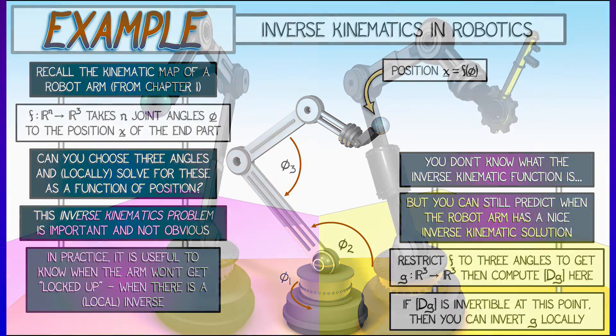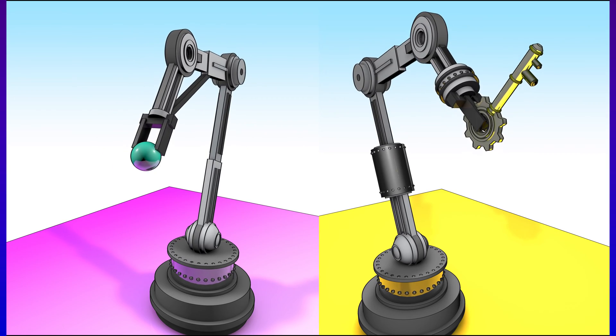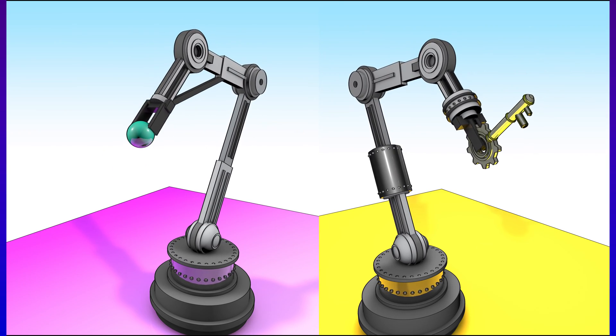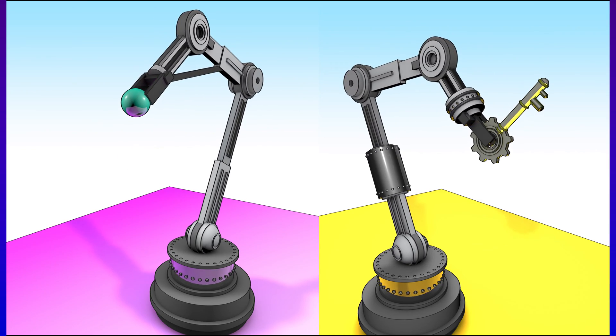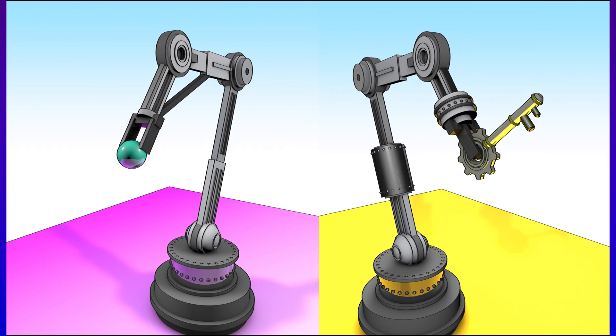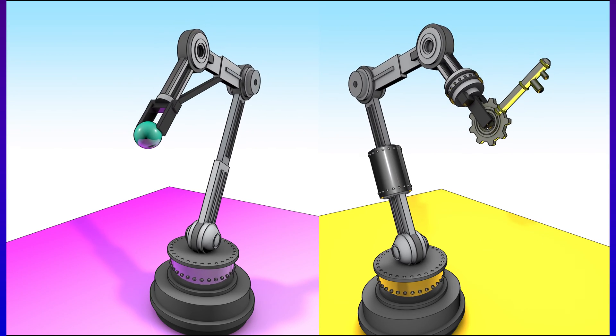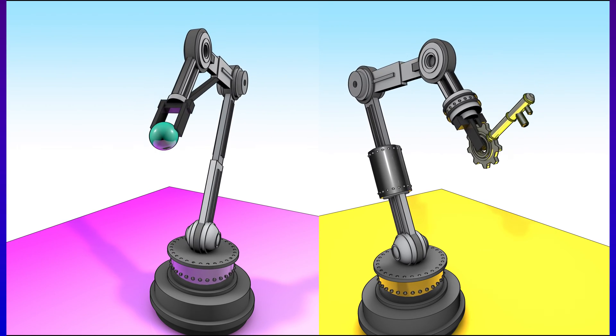Now, it's maybe worth seeing this in action and seeing what happens with this robot arm. With the arm on the left, this is something that has three degrees of freedom. There are only three angles that are changing locally, and you can see what is happening to the end location of the object that the arm is holding.